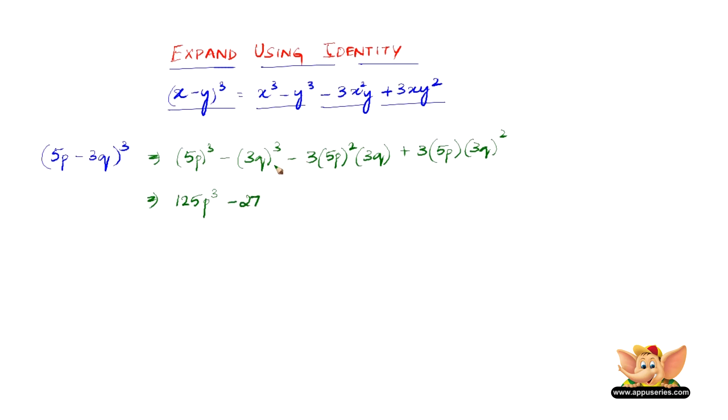With q, it becomes q³. For the third term, -3 × 5²: So 5 × 5 = 25, 25 × 3 = 75, 75 × 3 = 225, and we have p² and q.